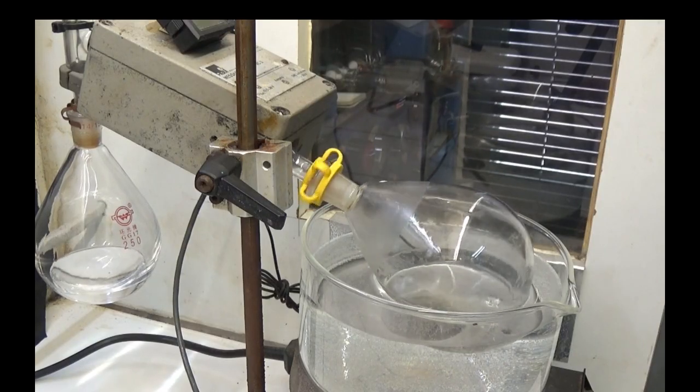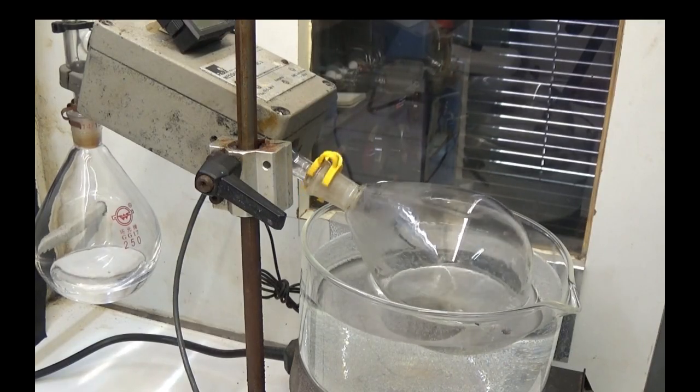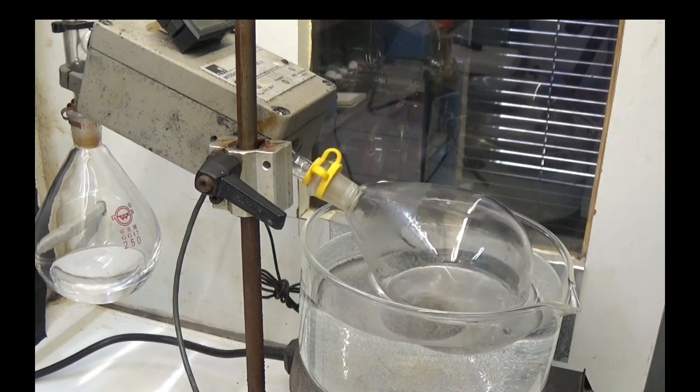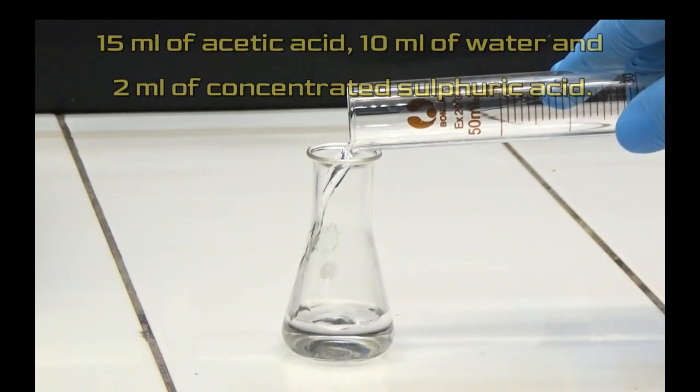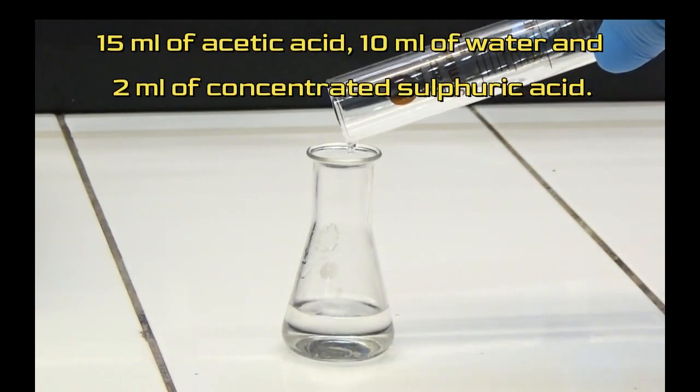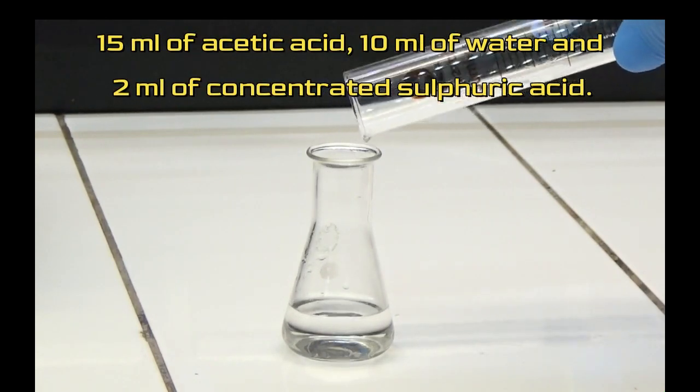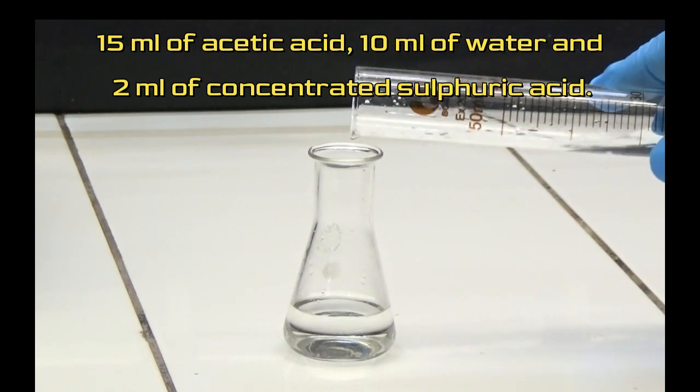Combine the layers of ether and evaporate without drying. Make a solution using 15 milliliters of acetic acid, 10 milliliters of water and 2 milliliters of concentrated sulfuric acid.